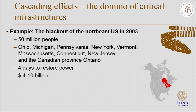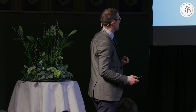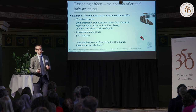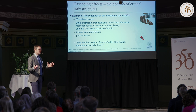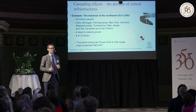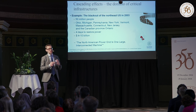A tree coming in contact with a power line led to a series of events, eventually resulting in a lot of people without power for a long time. Of course, you realize that this will create a lot of trouble for other systems, because we're all dependent on electrical power. But what is most interesting with this event is actually the investigation report following it. Here's a quote from that: 'The North American power grid is one large interconnected machine.' If you think about it, this is a machine that spans an entire continent. And it doesn't stop there, because there are so many other systems heavily dependent on electricity, so you can actually say the machine is much bigger than that.